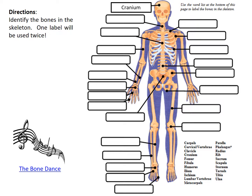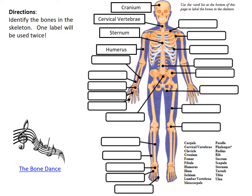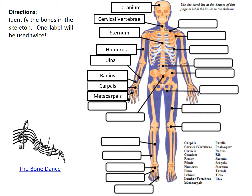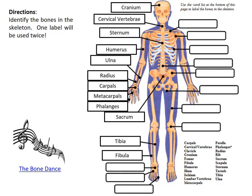Here are the answers. We have the cranium, which is the skull; the cervical vertebrae around the neck; the sternum, which is the chest bone; the humerus, the upper arm bone; the ulna and radius, the two lower bones of the arm; the carpals, your wrist bones; the metacarpals, the top of your hand; and the phalanges, your actual fingers. The sacrum is your tailbone, and the tibia and fibula are in the lower leg. The tarsals are your ankle bones.